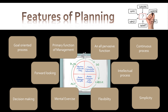Next, decision making: if there is only one possible alternative, there is no need for planning, because in that case there is no scope of choosing the best alternative. Now, mental exercise: what is to be done, where it is to be done, when it is to be done, how it is to be done, why it is to be done, and who is to do it — such things are completely a mental exercise. So planning is also known as a mental exercise.